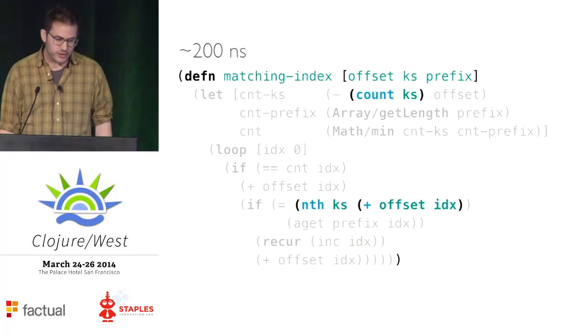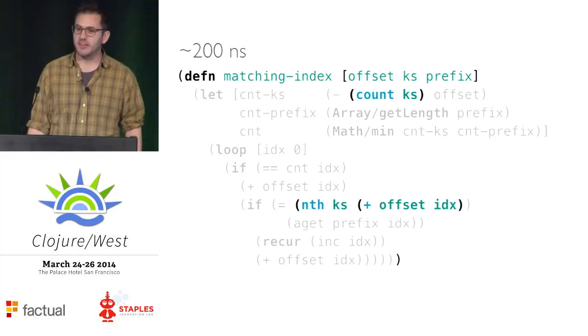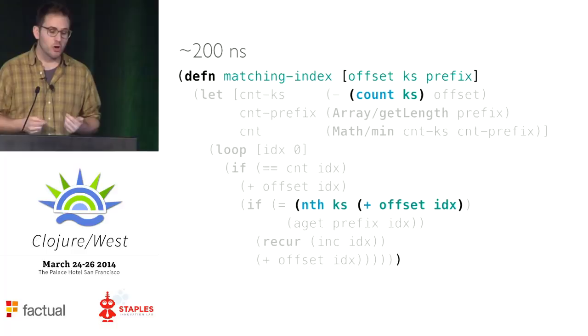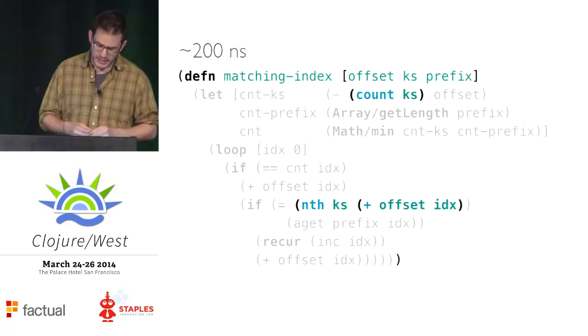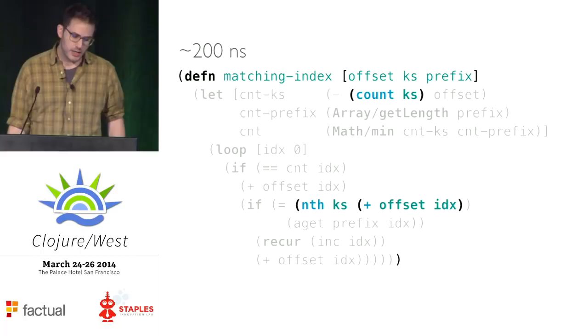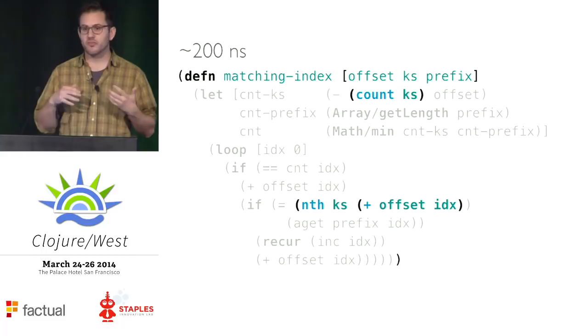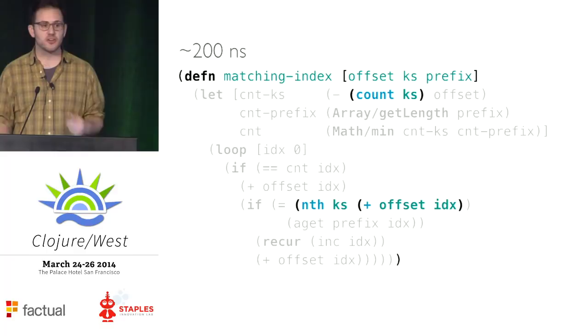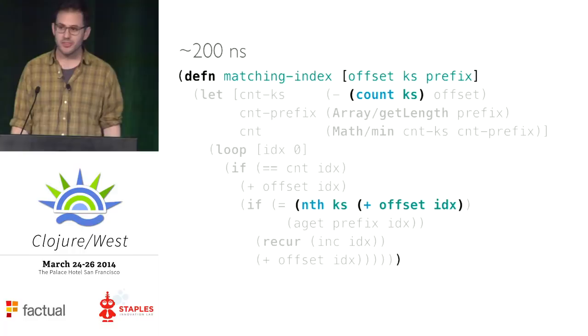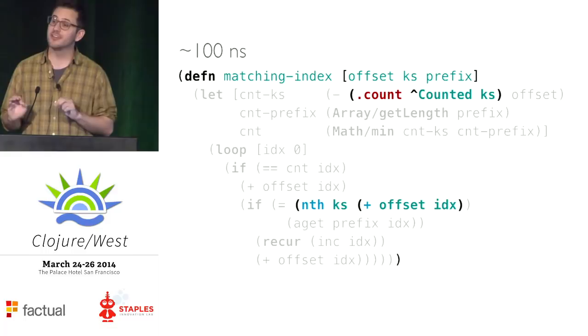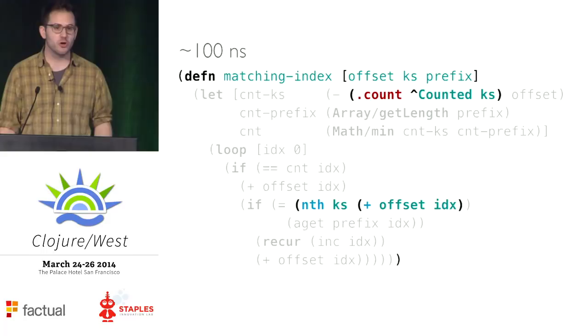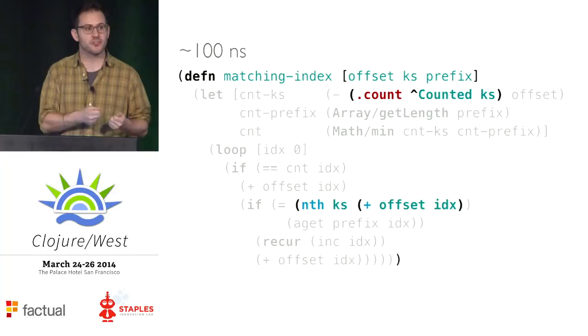And yet, here is a more complex function I wrote recently, which takes an array and a vector and tries to find a matching subsequence within them. I've highlighted the fact that I'm calling count on the vector, and then again in the loop calling nth repeatedly on the vector. This is taking about 200 nanoseconds for a 10-element vector. There's an overhead here due to this indirection — the process of discovering what we're actually calling count on is being repeated. We first discover it is a vector when we call count, and rediscover again that yes, it is still a vector each time we call nth.